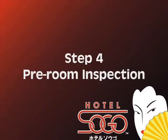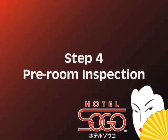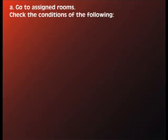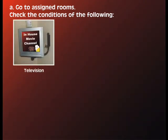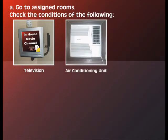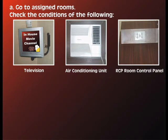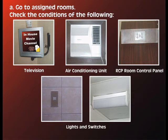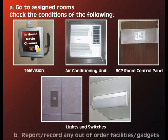Step 4: Pre-room inspection. Go to assigned rooms and check the conditions of the following: Television, Air Conditioning Unit, Room Control Panel (R.C.P.), Lights and switches. Report and record any out-of-order facilities and gadgets.